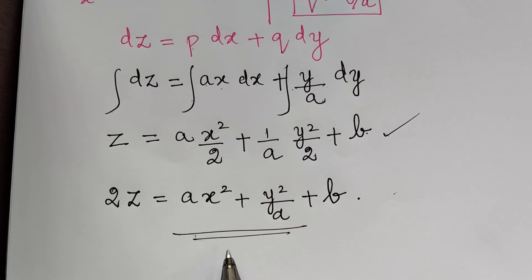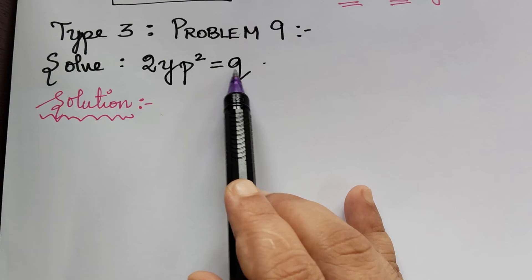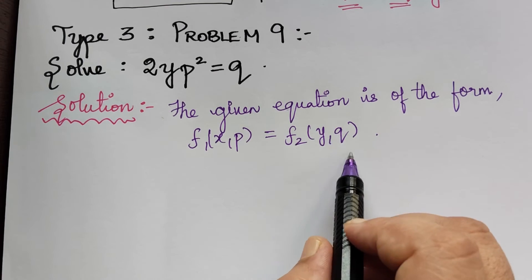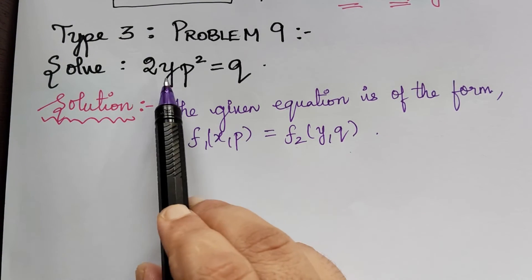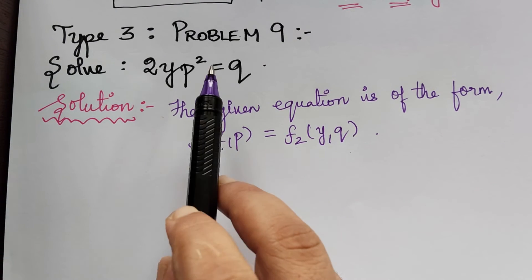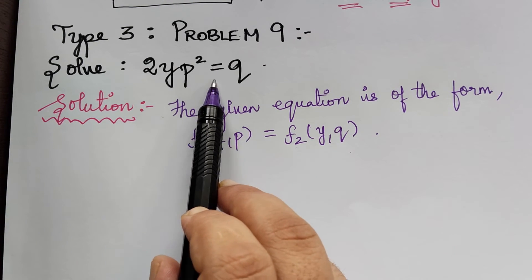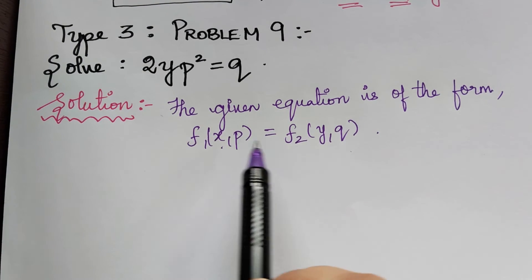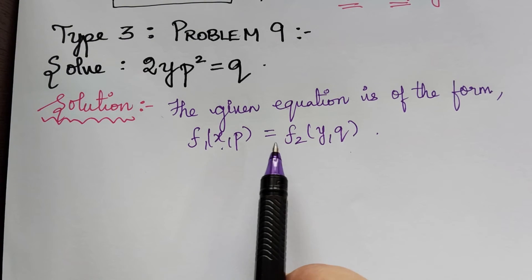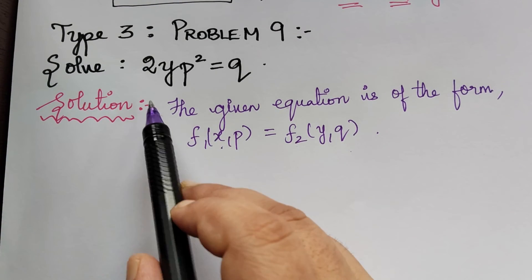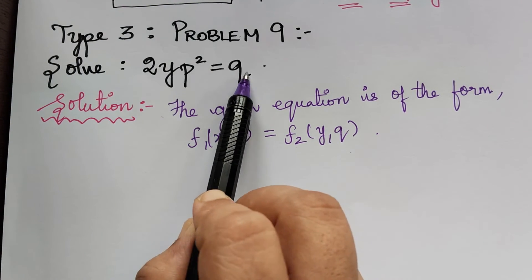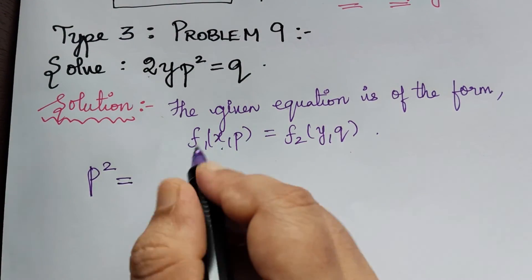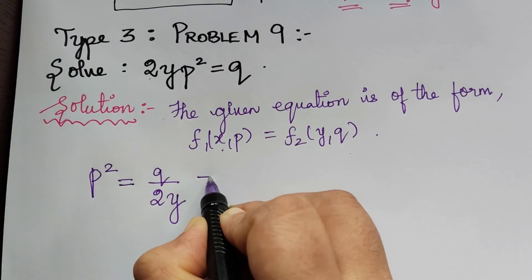We now solve problem 9: solve 2yp squared equals q. If z is not present, the equation is of the form f1 of x comma p equals f2 of y comma q. Here we have p, q, and y but not x; it still falls under type 3. Gathering p to the left and y, q to the right: p squared equals q by 2y, equated to constant a.